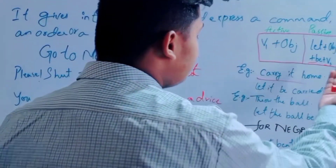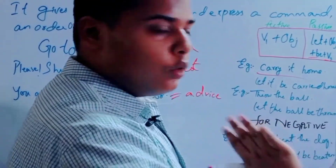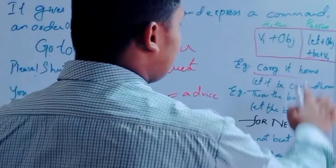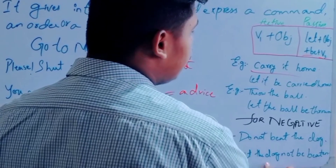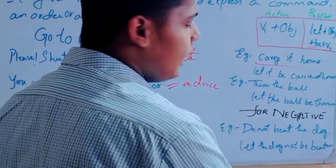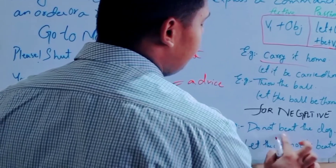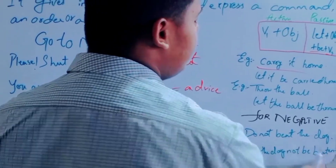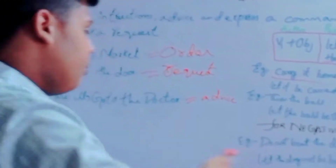We put 'be not' and then place the object — 'the dog' — after 'be'. Because we are making it negative, we use 'be' and then the third form of the verb. The third form of 'beat' is 'beaten'. This is the same way.